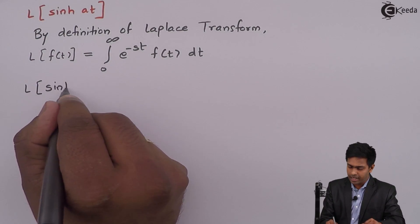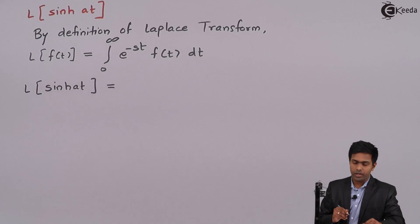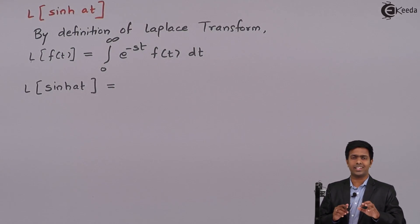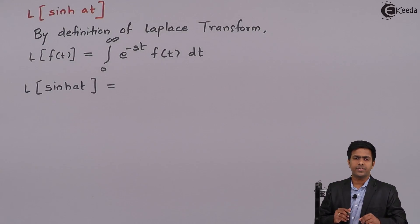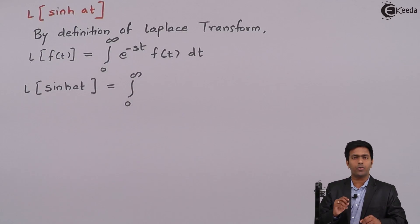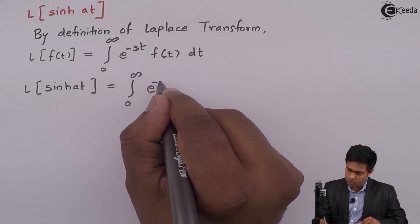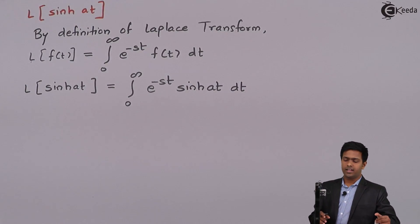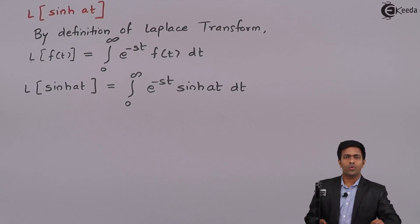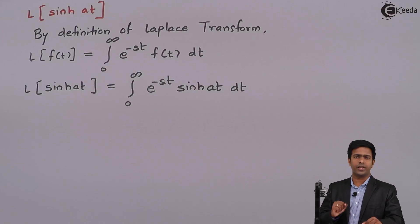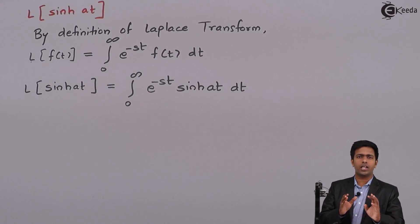Now let us use this definition to find the Laplace of hyperbolic sine at. So, Laplace of sinh(at) equals the integral from 0 to infinity. Comparing sinh(at) with f(t), we can say f(t) is equal to sinh(at). On the right-hand side we substitute f(t) as sinh(at), giving us the integral of e raised to minus st times sinh(at) dt. To evaluate this, we will convert the hyperbolic sine function into exponential form.